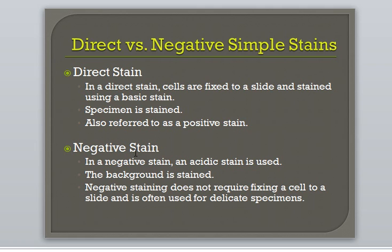In a direct stain, a basic stain is used. Remember, a basic stain has a positively charged chromophore; thus the specimen will be stained in a direct stain. In order to perform a direct stain, the specimen must first be fixed to a slide, so it will remain on the slide during the staining process. A direct stain is also referred to as a positive stain. Methylene blue is a commonly used direct stain.